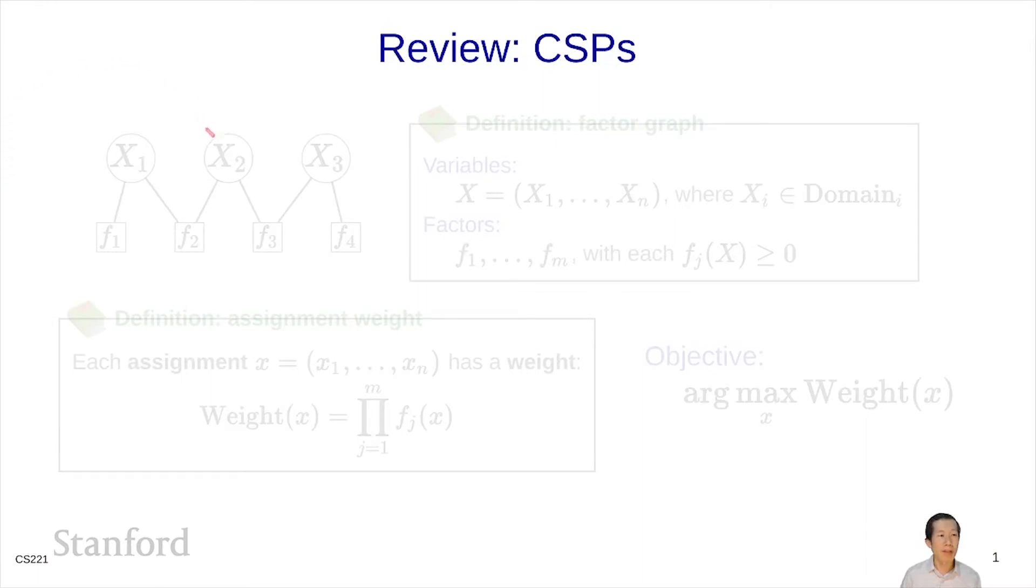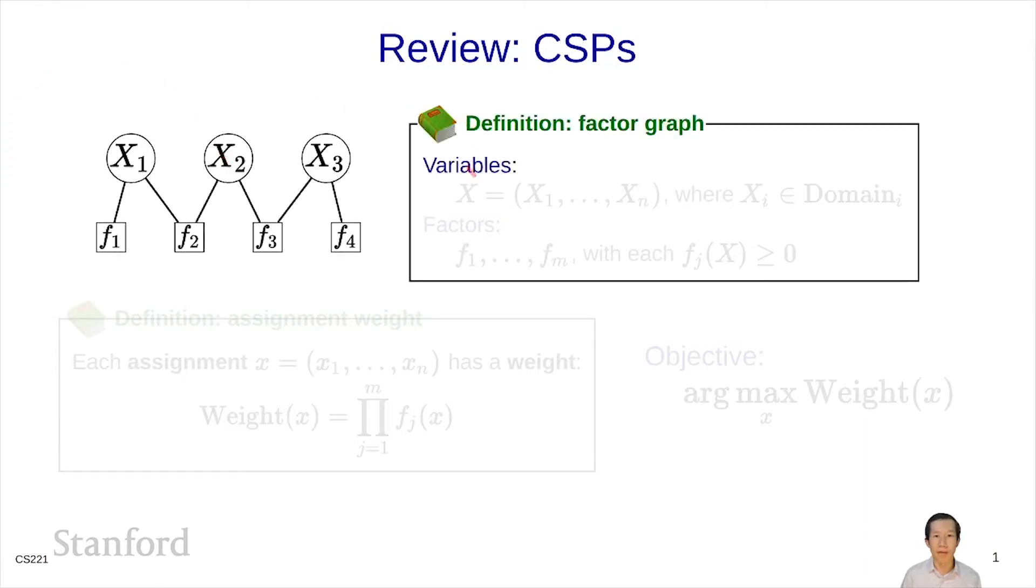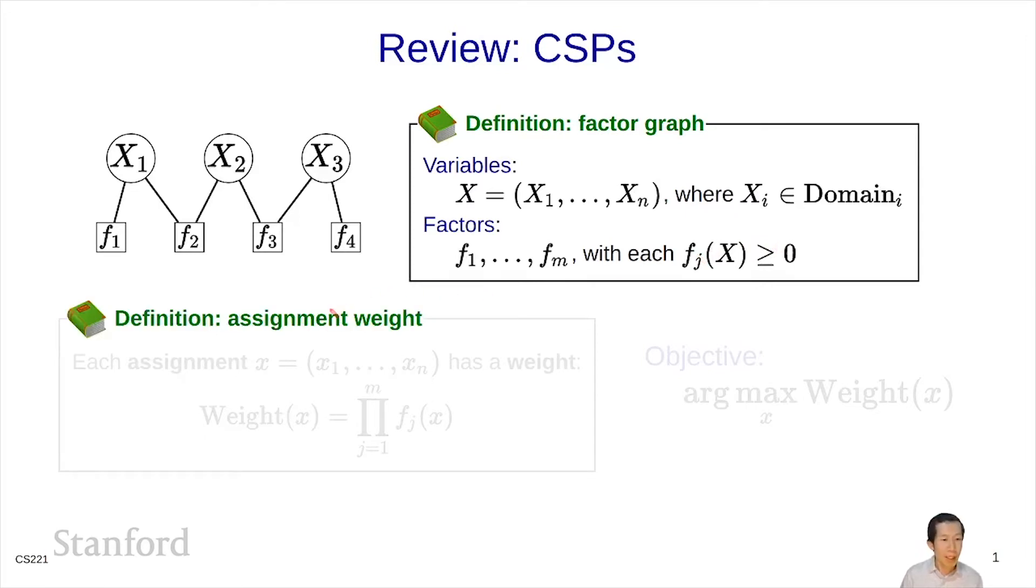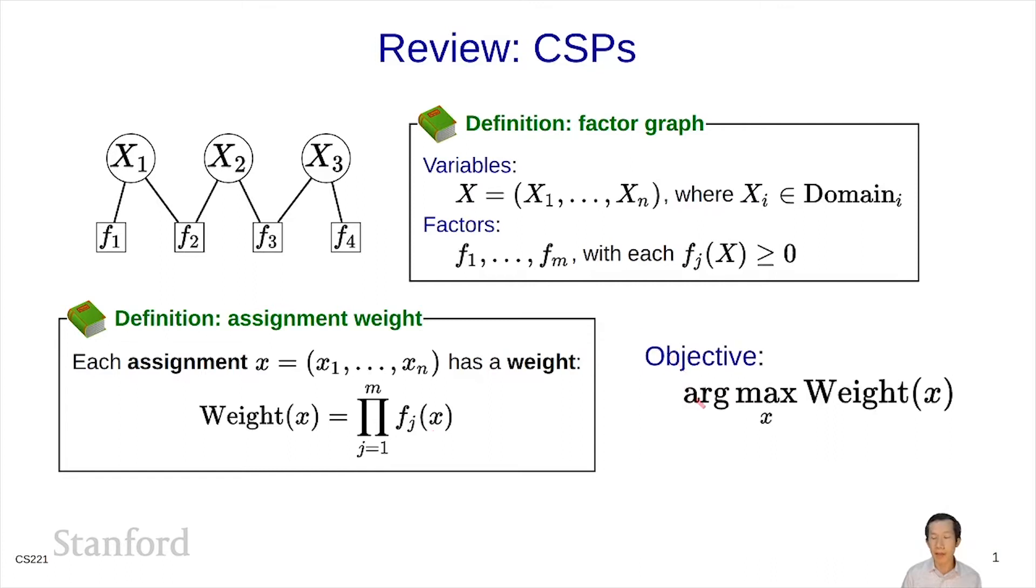Remember that a CSP is defined by a factor graph which includes a set of variables x1 through xn and a set of factors f1 through fm, where each factor is a function that depends on a subset of the variables and returns a non-negative number. Each assignment to all the variables has a weight given by the product of all the factors evaluated on the assignment, and the objective is to compute the maximum weight assignment.